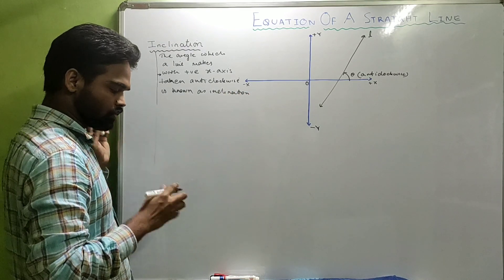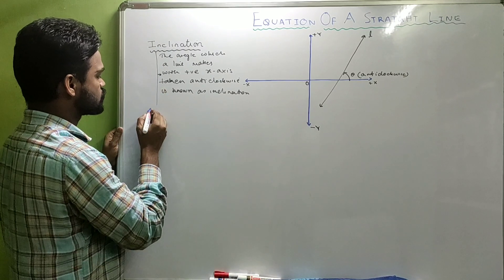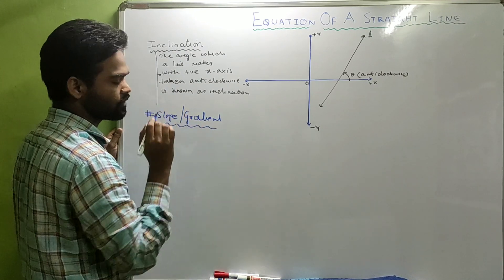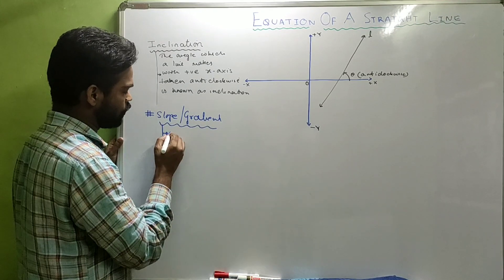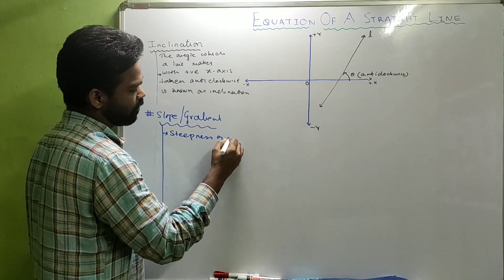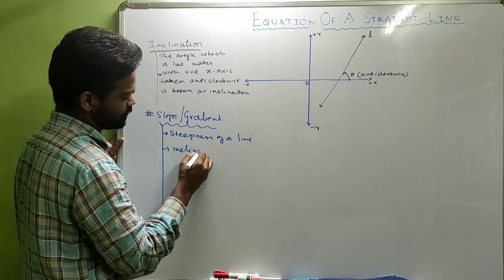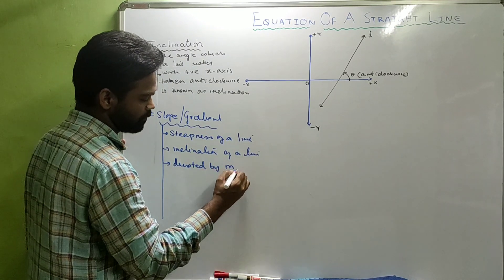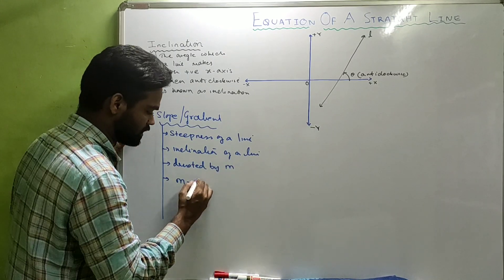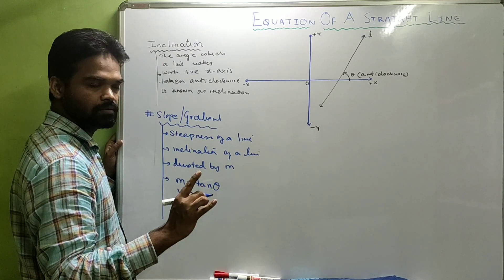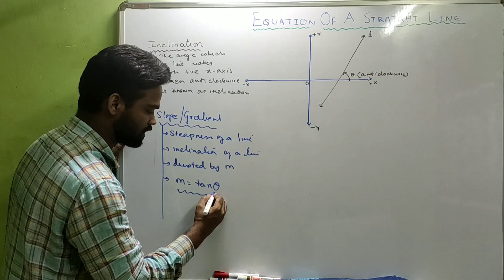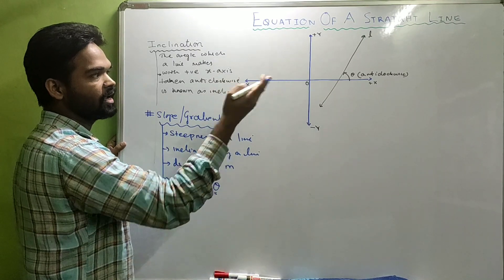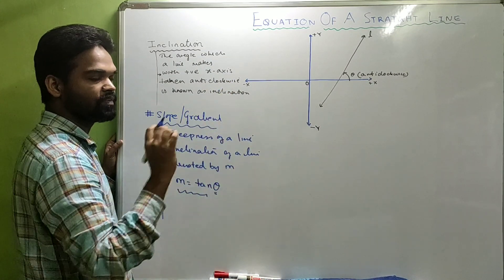From inclination we get a very important concept: slope or gradient. Slope represents the steepness of a line. It is denoted by M, and M is calculated as the tangent of the angle made by the line with the positive x-axis — that is, slope M equals tan theta.